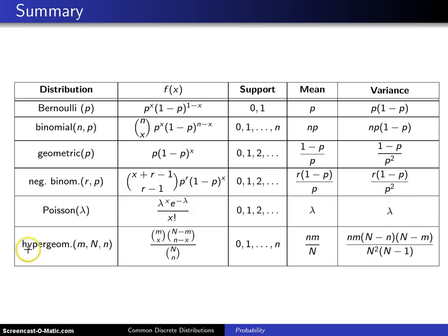The last section devoted to one distribution was the hypergeometric distribution. It has three parameters. The middle parameter here, capital N, at least in acceptance sampling, is referred to as the lot size. The third parameter, lowercase n, is referred to as the sample size, and the m parameter here refers to the number of successes in the lot.